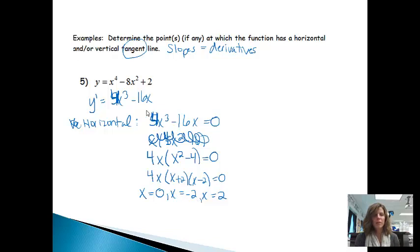Now, you'll notice it said to determine the point, and we all know that a point is an x and a y value. I've only found the x value, so what I can do now is when x equals zero, let's just plug zero in here for the x. And when I do that, I end up getting y equals 2. So one place where there's going to be a horizontal tangent line is the point (0, 2).